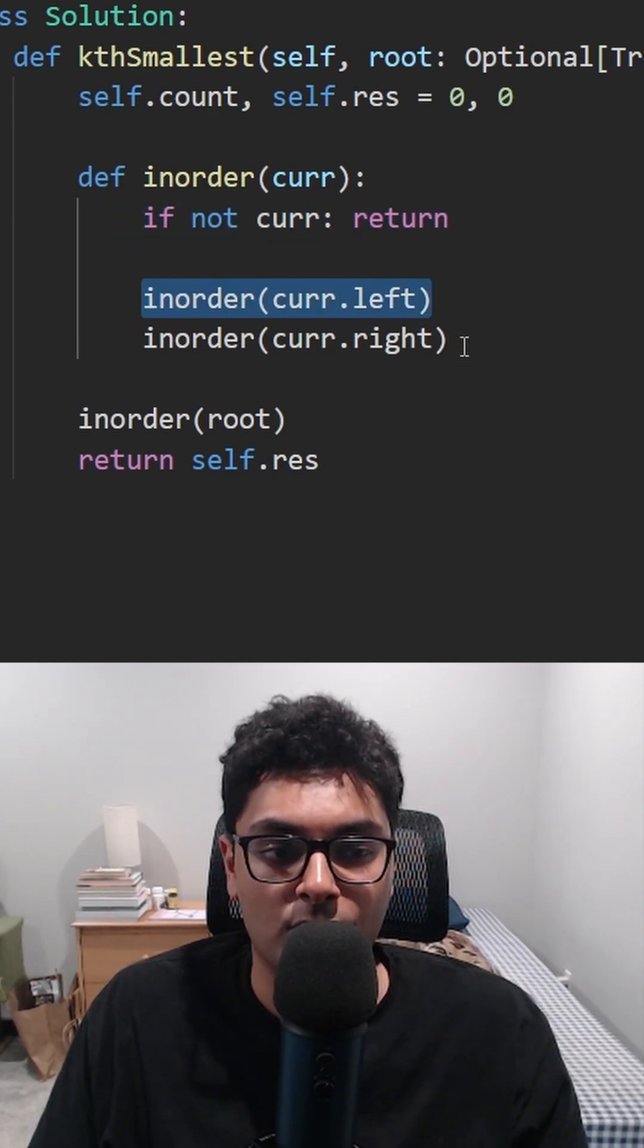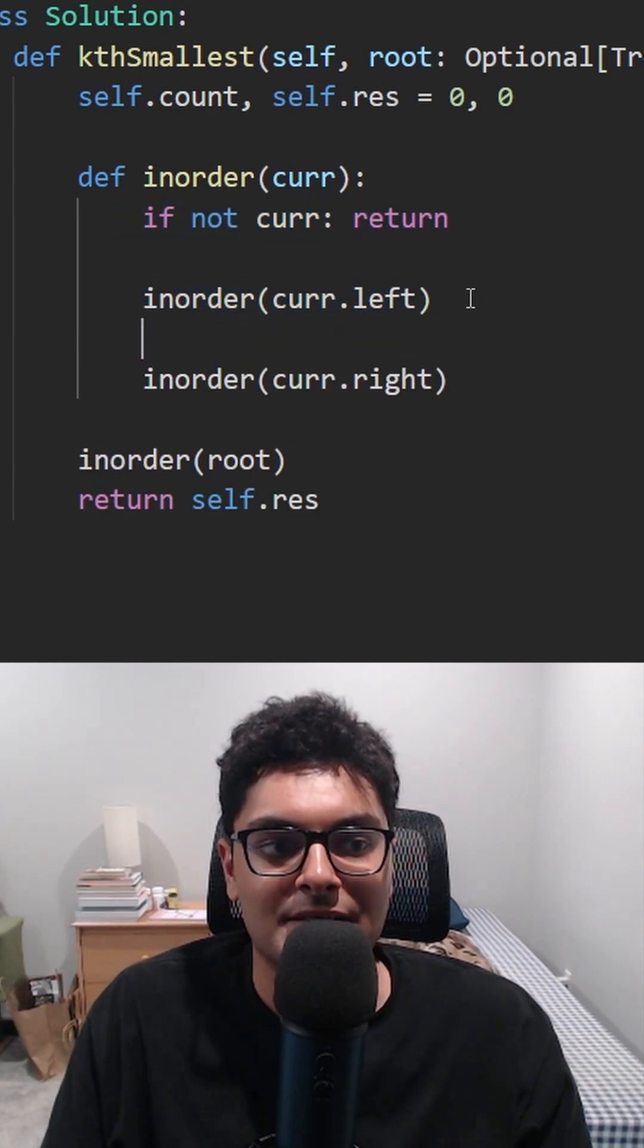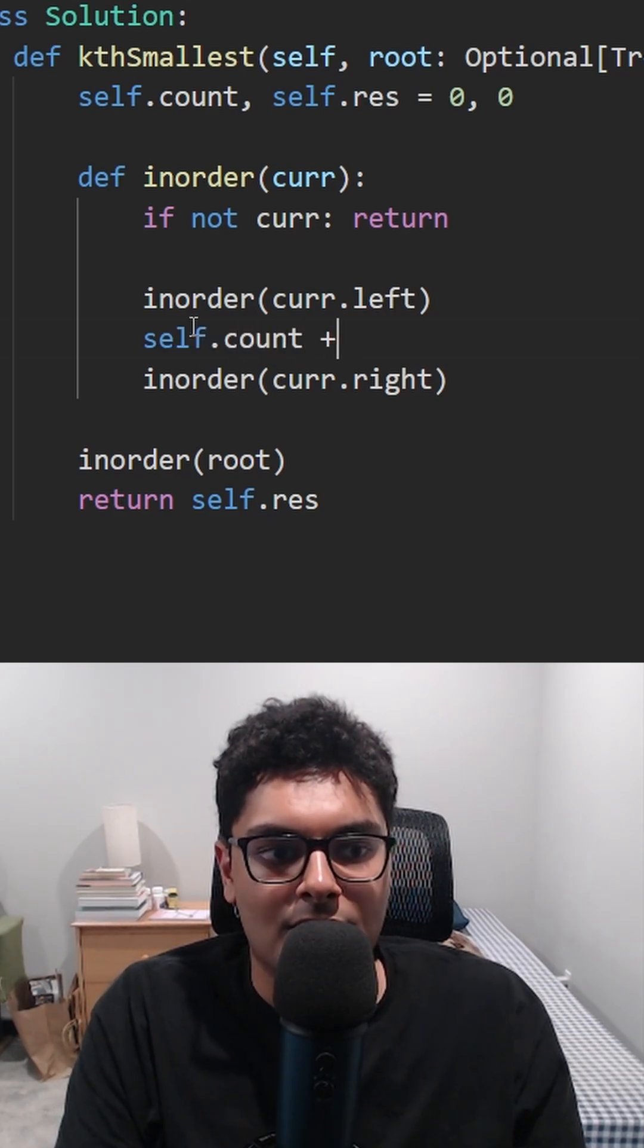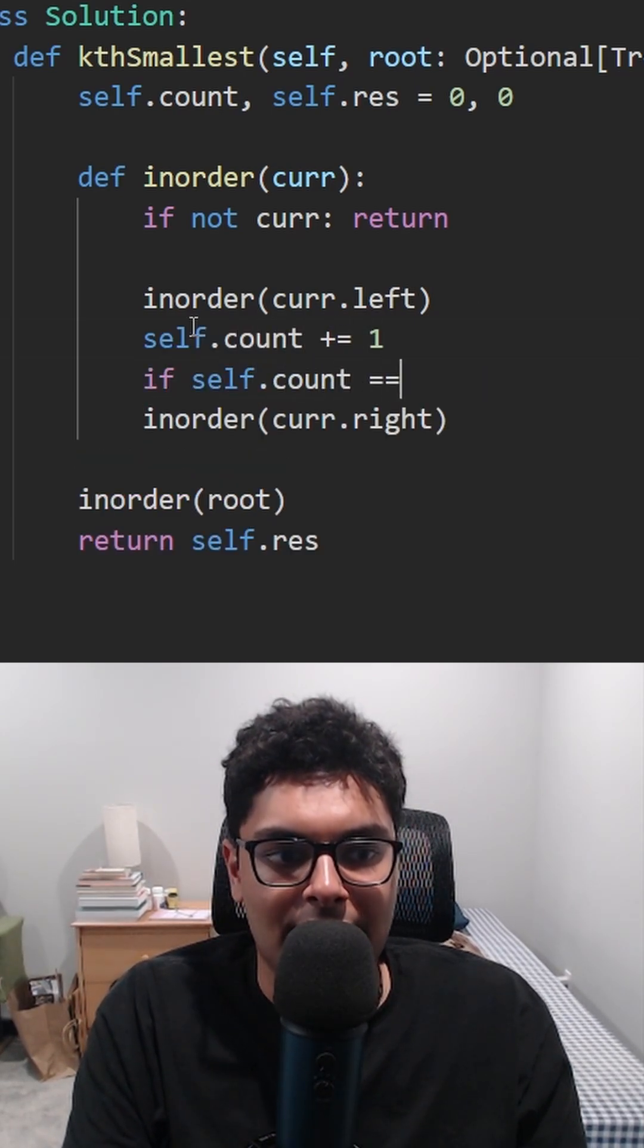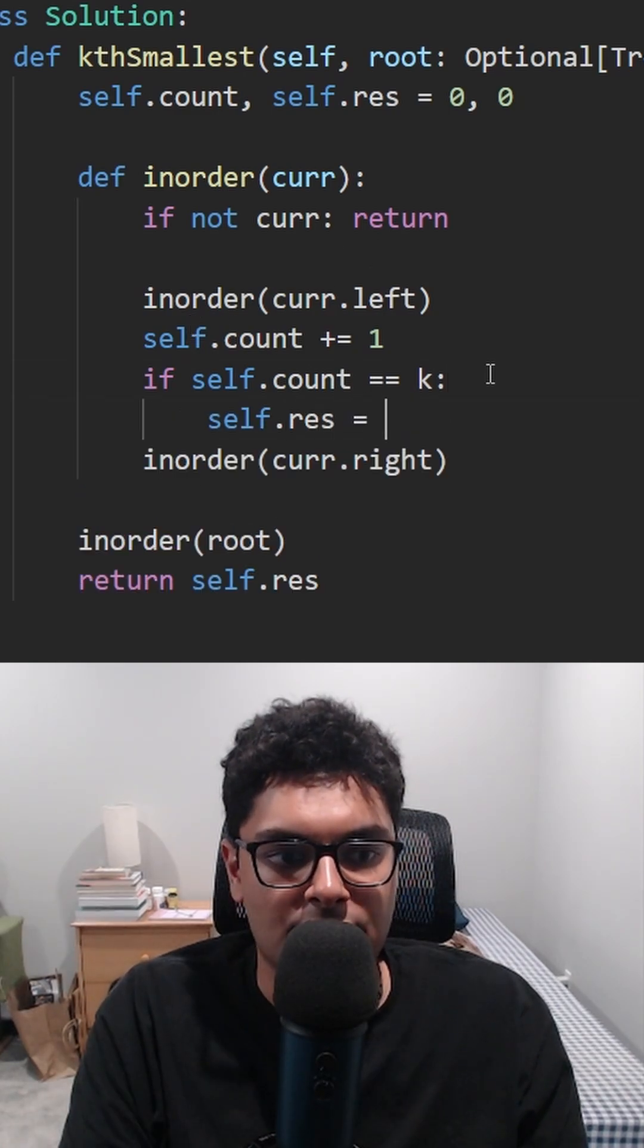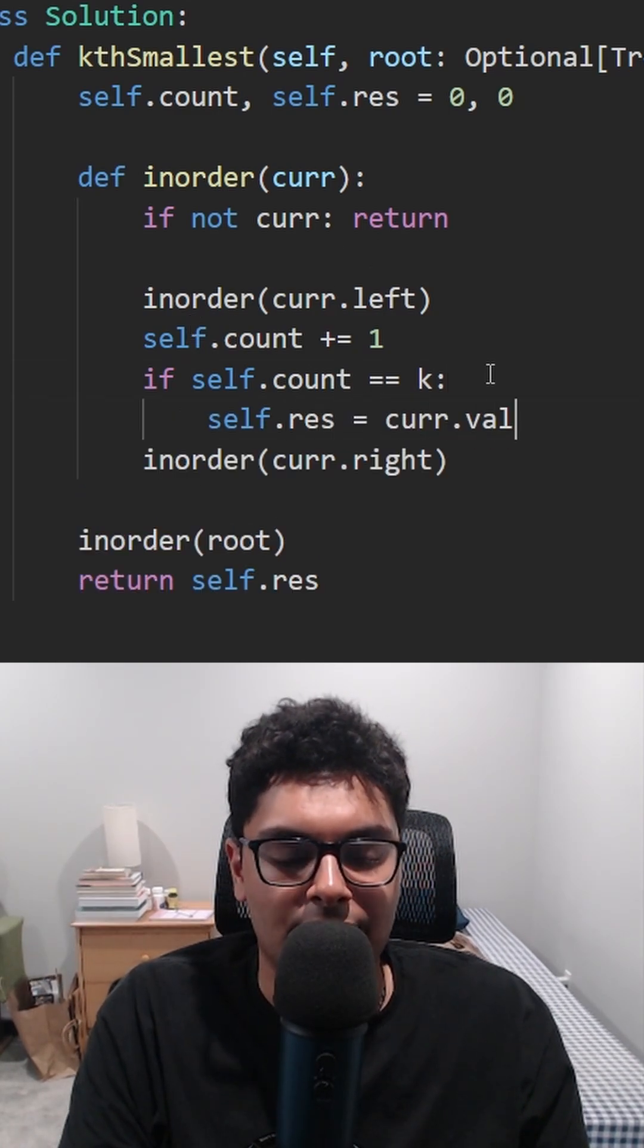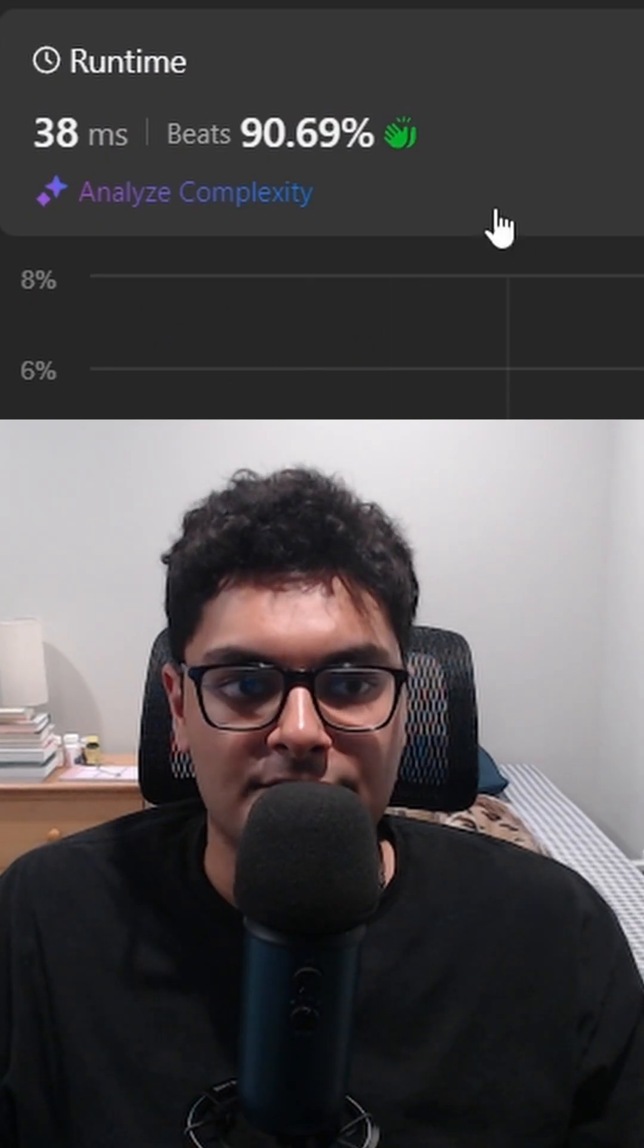We want to traverse the left subtree before the right subtree. But what do we do in between here? We can set our count and increment it just by one. And if we ever get to a point where the count is equal to k, we can set result equal to the current node's value. And as you can see, it works and it's very efficient.